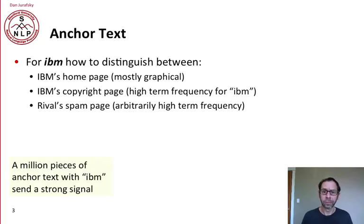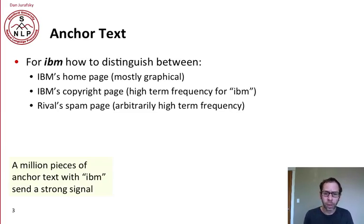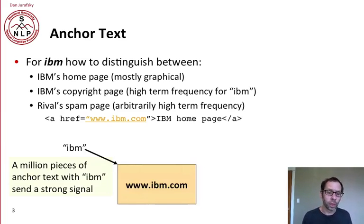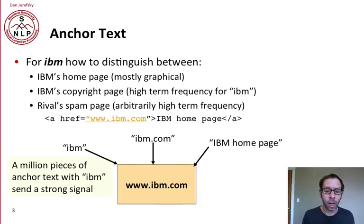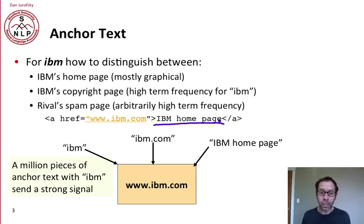Let's look at an example. Imagine we're trying to find IBM's homepage. The homepage itself is mostly graphical with very little text. There's maybe a copyright page full of the word IBM, and maybe a rival spam page with arbitrarily high term frequency — IBM repeated many times. How do we find the true IBM? The intuition is that a million pieces of anchor text from different pages pointing to IBM sends a strong signal: one link saying 'IBM', another saying 'IBM.com', another saying 'IBM homepage'. Adding this up over all possible links gives a very strong cue about what's a good and relevant page.